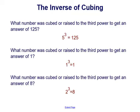Because 5 cubed equals 125, the answer to what number was raised to the third power to get 125 is 5. Because 1 to the third equals 1, the number cubed to get 1 is 1. And since 2 to the third equals 8, the number cubed to get 8 is 2.